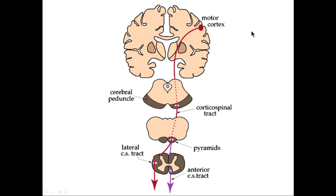This presentation deals with a quick review of the corticospinal tract. The corticospinal tract is a neuronal pathway that originates in the brain, specifically the motor cortex, travels down the brainstem, crosses over the midline, and eventually ends up in the anterior horn of the spinal cord gray.